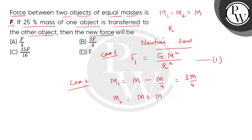So this is the second mass: M plus M divided by 4. So this will be 5M divided by 4.